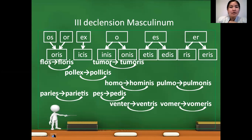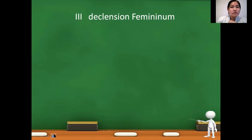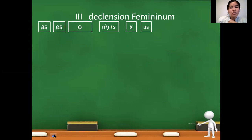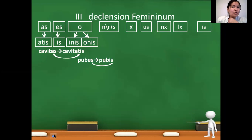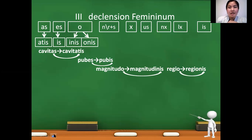Next group of nouns are third declension feminine nouns. For this group AS, IS, O, NS or RS, X, US, NX, IX, IS endings are common. For constructing genitivus, AS we change to atis: cavitas to cavitatis. IS we change to idis: pubes to pubis. For ending O again corresponds to genitivus endings, but here we look at pre-last letter. When magnitudo, pre-last letter consonant, we use inis ending: magnitudo to magnitudinis. When regio, pre-last letter vowel, we use ending onis: regionis.